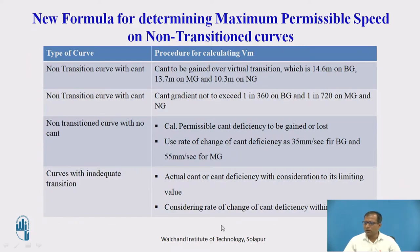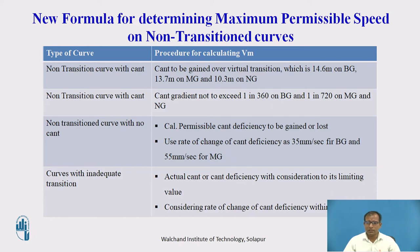For non-transition curves, we have discussed how to calculate the maximum permissible speed based on transition curves. This applies when there are restrictions on providing transition curves at a site due to site constraints or land availability. We always prefer to provide a longer transition curve for easement, but if there are restrictions, we calculate the safe speed using the procedure given.